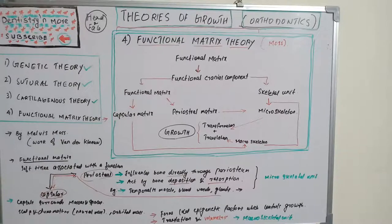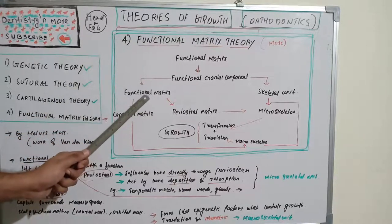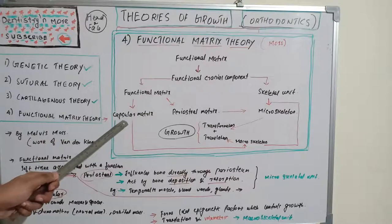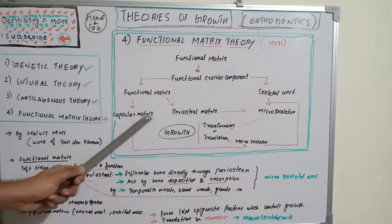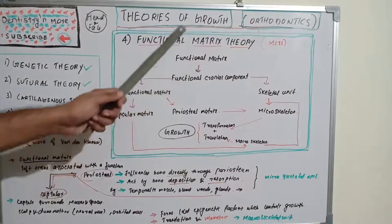This is a very different concept put forward by Melvin Moss — originally the work of Van der Klaauw, later modified by Moss. The functional cranial component has two units: the functional matrix and the skeletal unit. The functional matrix is further divided into the capsular matrix and the periosteal matrix.